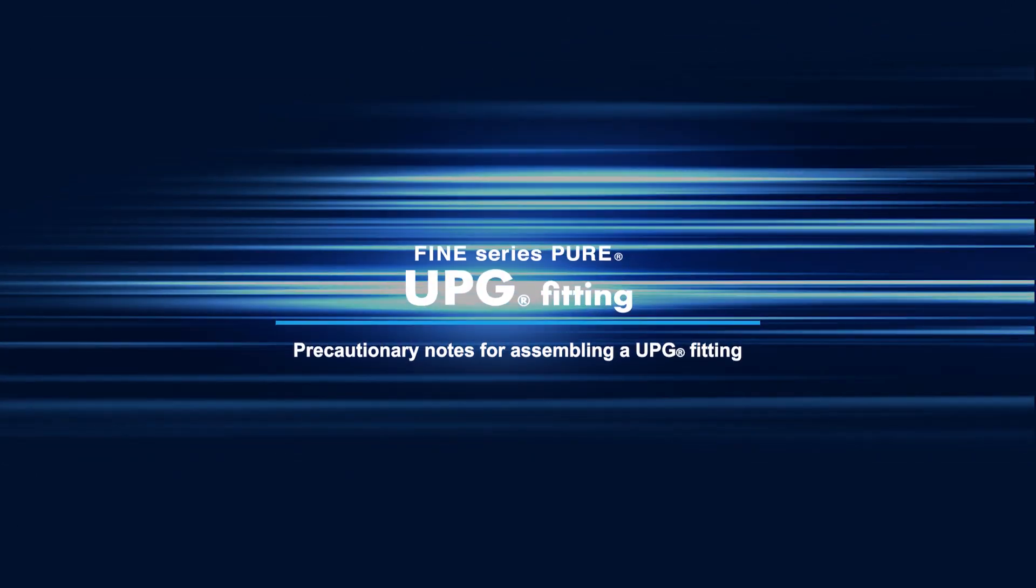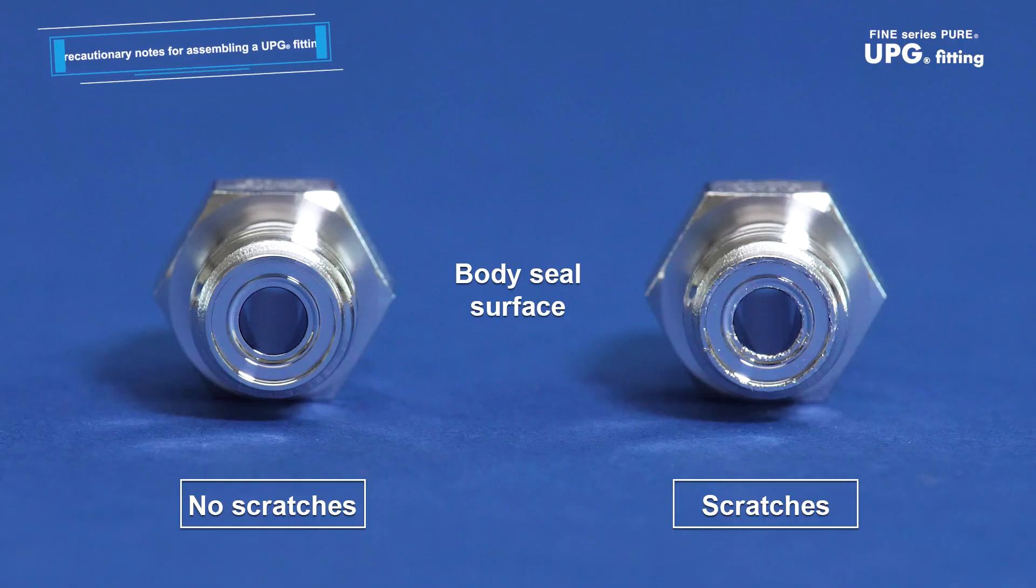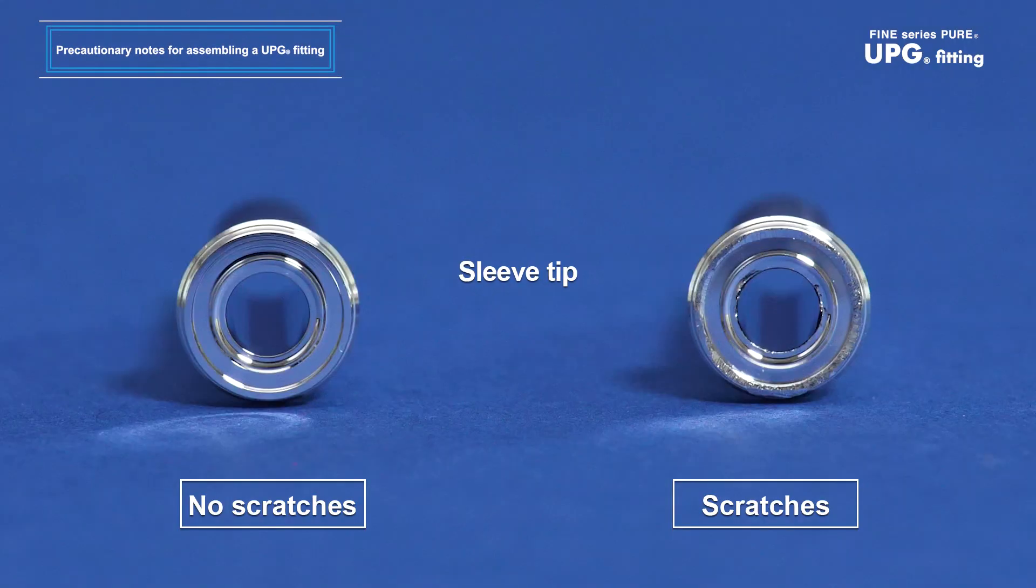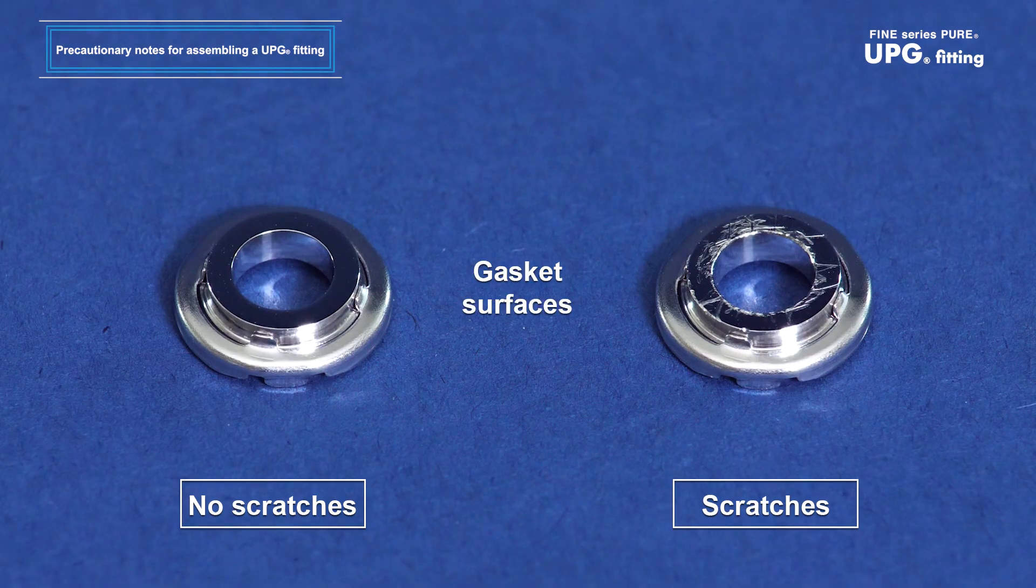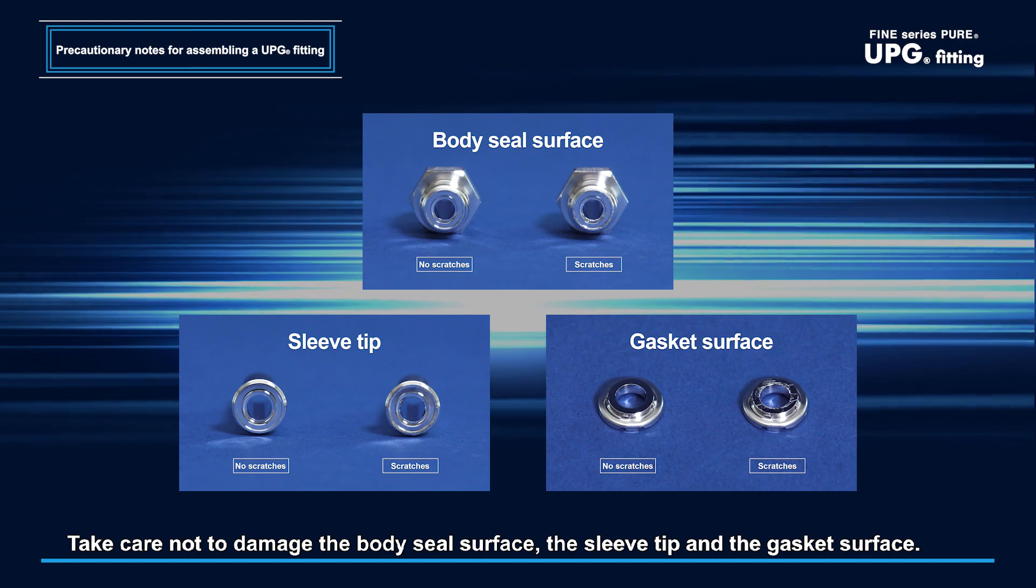Precautionary notes for assembling a UPG fitting: Take care not to damage the body seal surface, the sleeve tip, and the gasket surface. Any such damage will adversely affect seal performance.